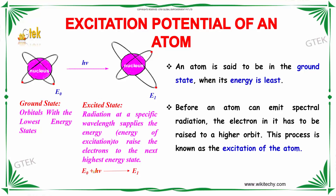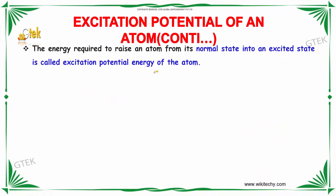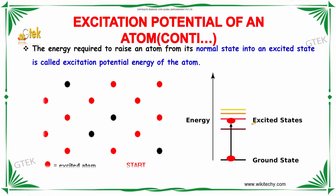E0, that's the ground state, plus the energy, you'll get E1. An atom is said to be in the ground state when its energy is lowest. Before an atom can emit spectral radiation, the electron in it has to be raised to a higher level. This process is known as the excitation of the atom. The energy required to raise an atom from the normal state into an excited state is referred to as the excitation potential energy of the atom.